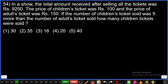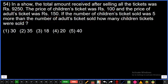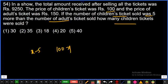Question number 54: In a show, total amount received after selling all tickets was rupees 9250. Children's ticket price was rupees 100, adults ticket price was rupees 150. Number of children's tickets sold was five more than adults tickets sold. Let children's tickets = x, so adults tickets = x − 5. Amount from children: 100x. Amount from adults: 150(x − 5).